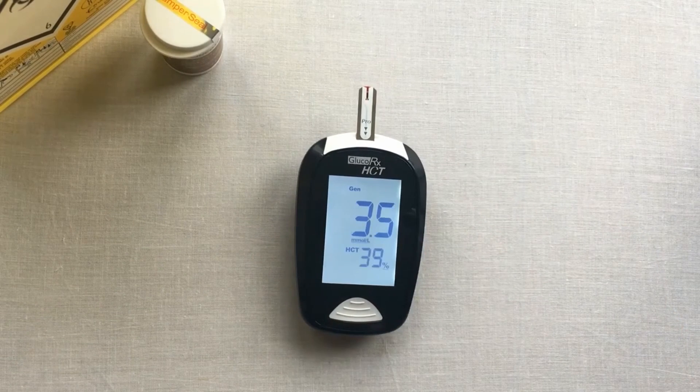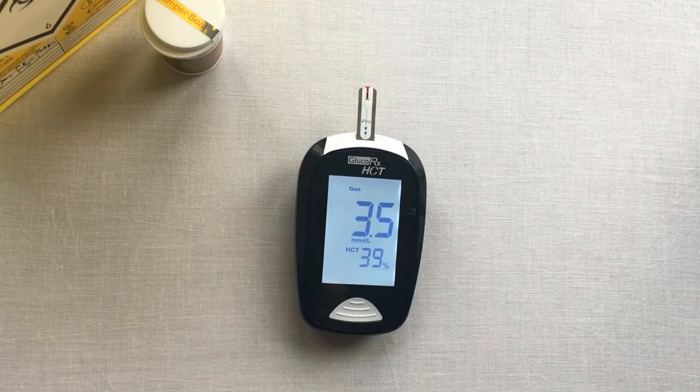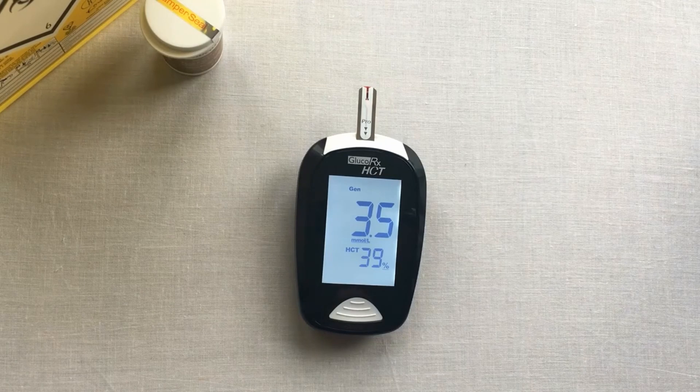Your meter will begin to count down from five to zero. Here your result is displayed on the screen alongside the hematocrit reading.